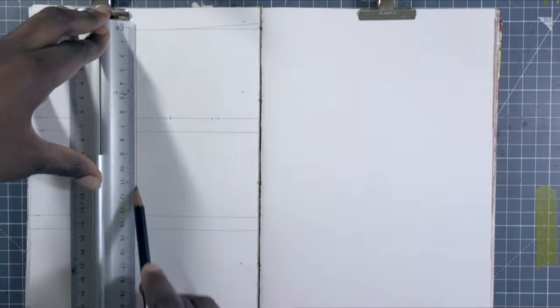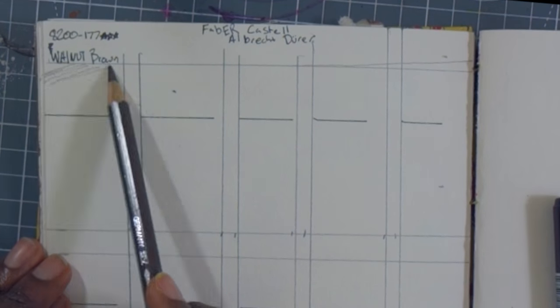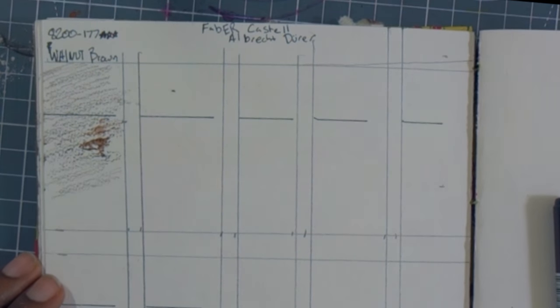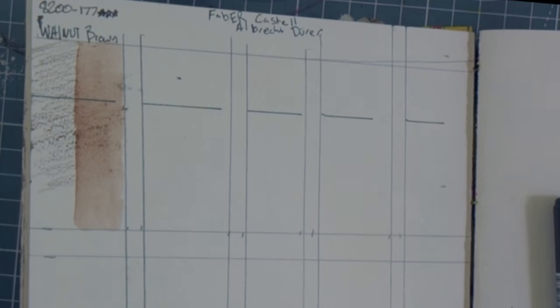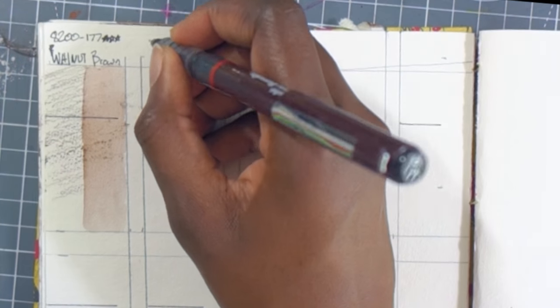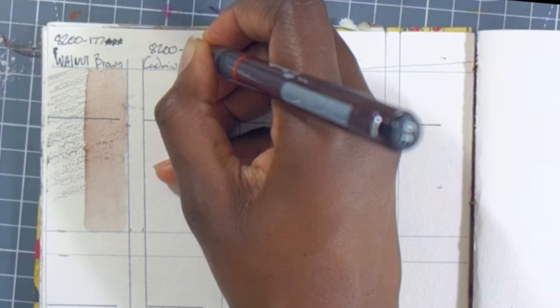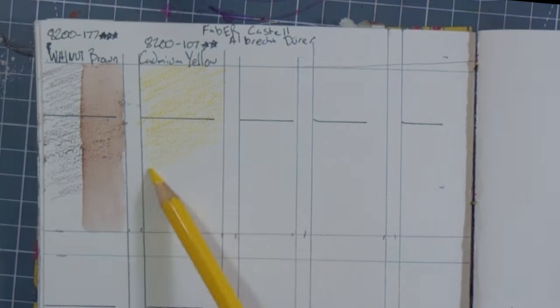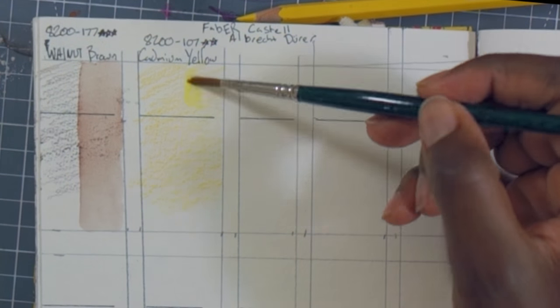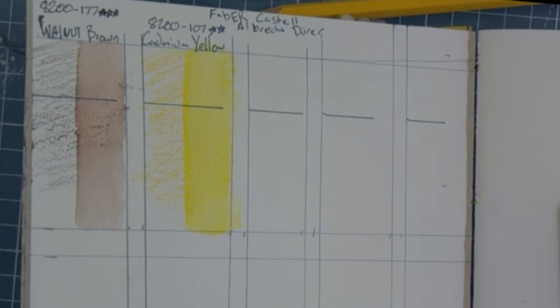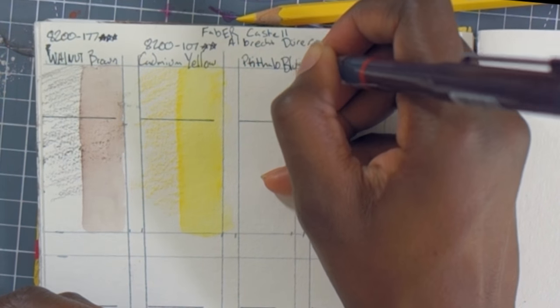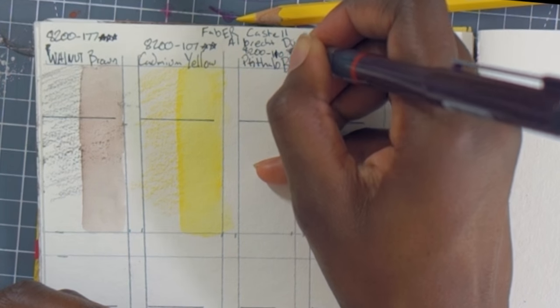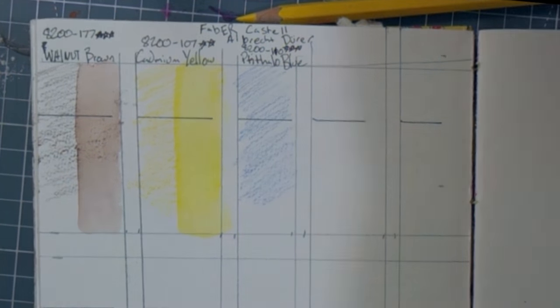I'm going to do some tests. I'm going to swatch each of these colors starting with walnut brown. I'll leave one side dry and wet the other side. If the colors look a little washed out, that might be because I'm drawing them with a very light hand so there's not a ton of pigment on the paper.